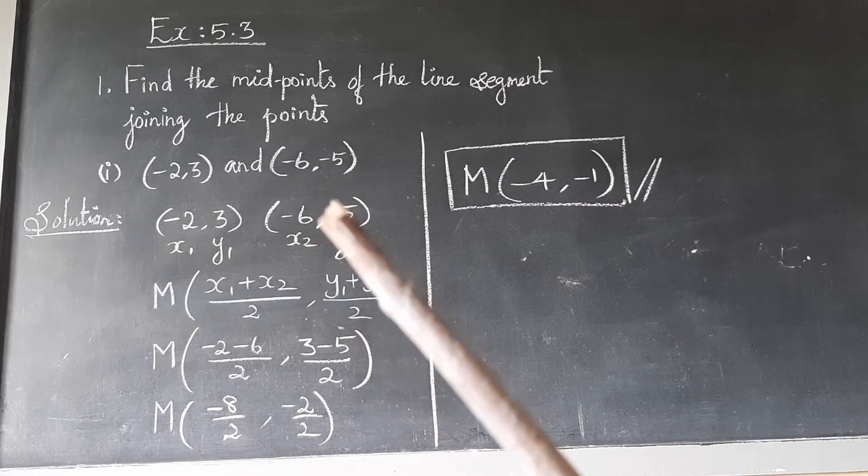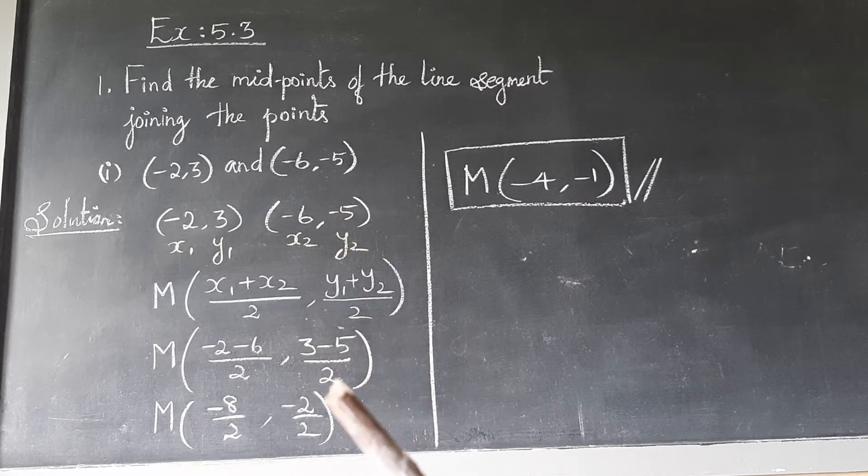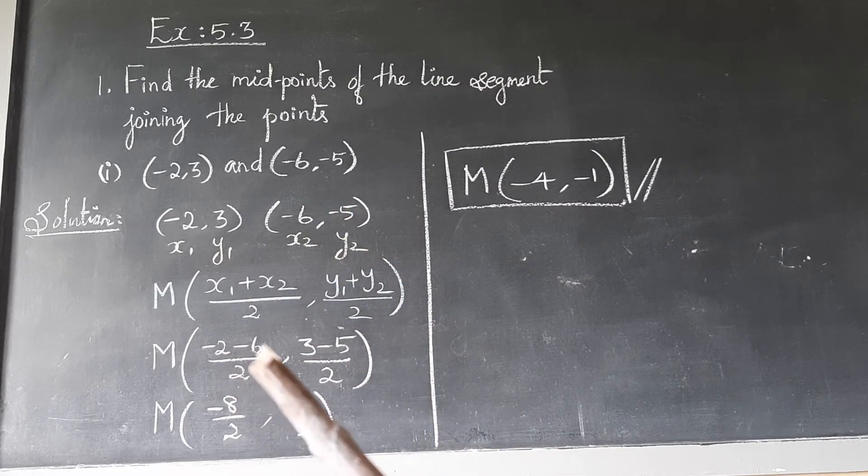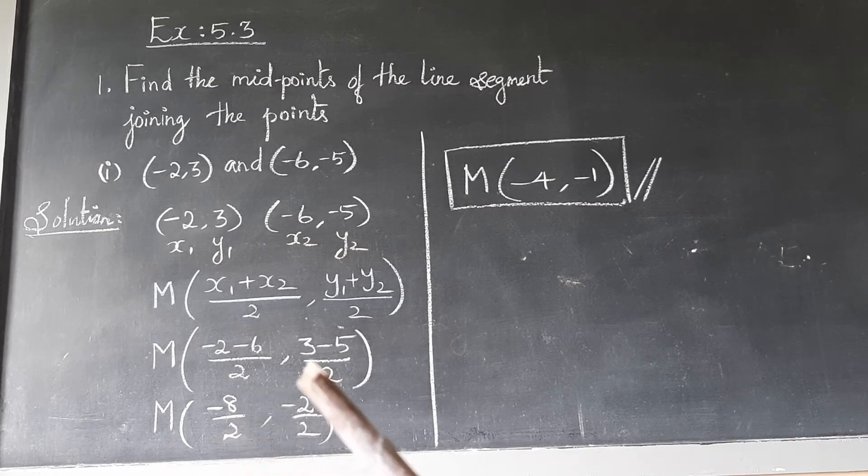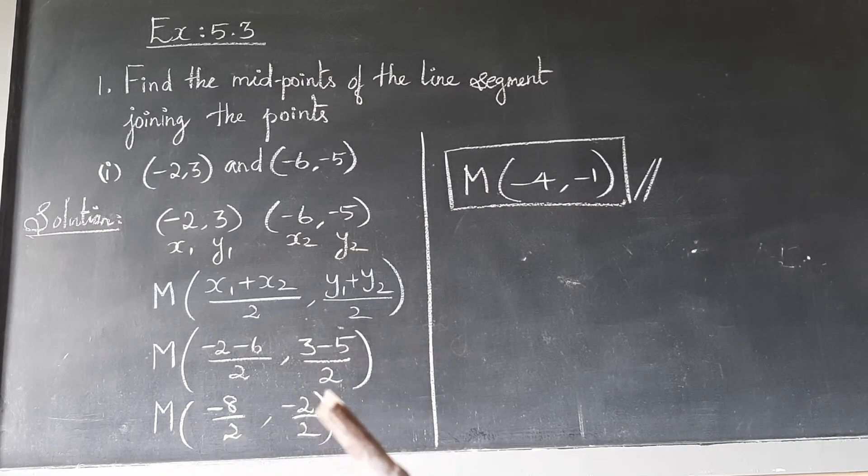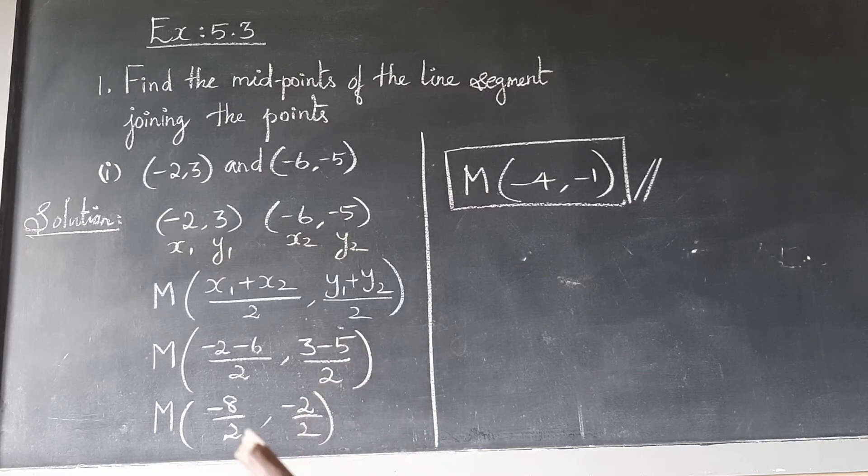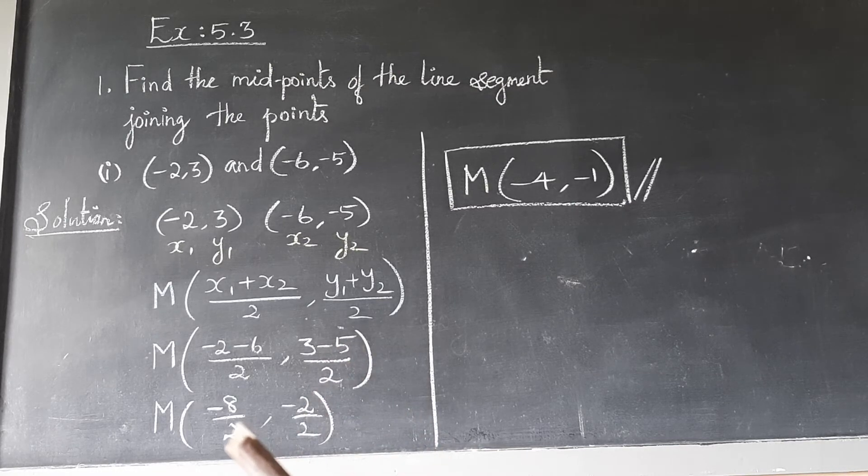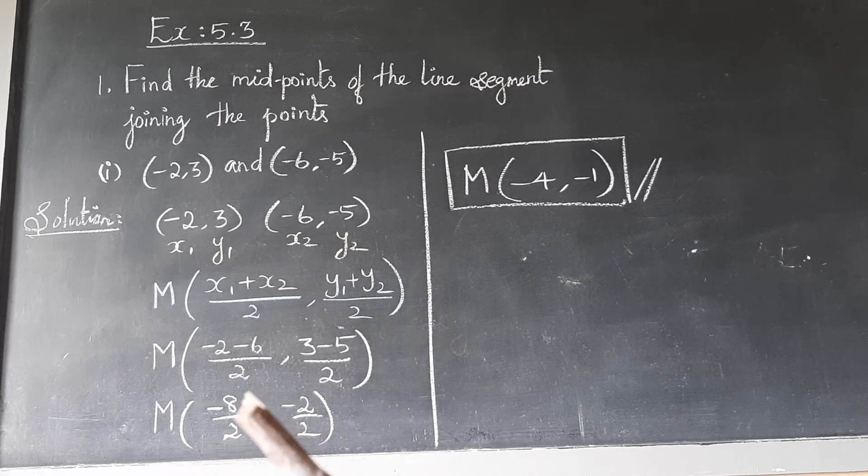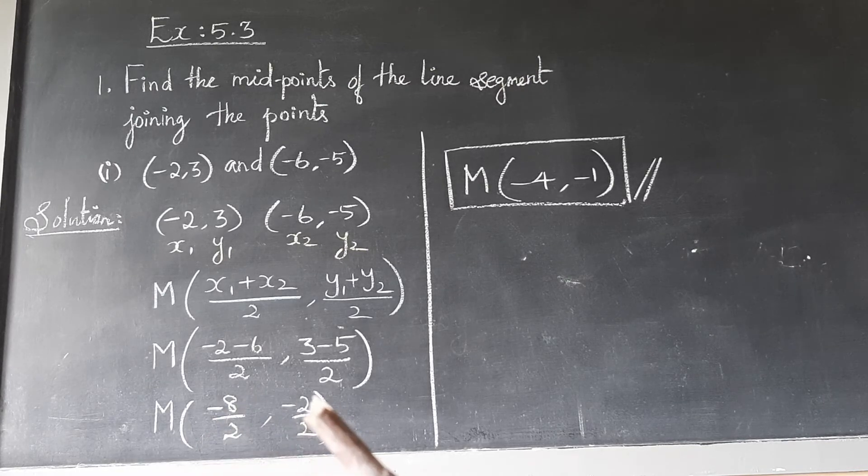So (-2 - 6)/2 comma, y1 is 3 and y2 is -5, so (3 - 5)/2. -2 - 6 is -8, divided by 2. 3 - 5 is -2 because 5 is the greater number, so -2/2. If you cancel, 8/2 equals 4, and 2/2 equals 1.